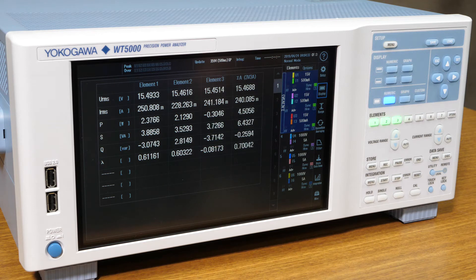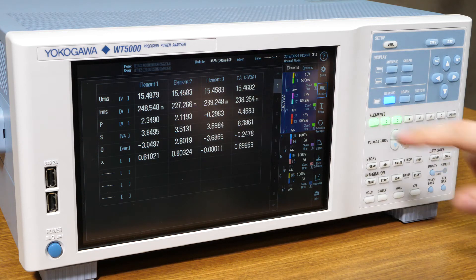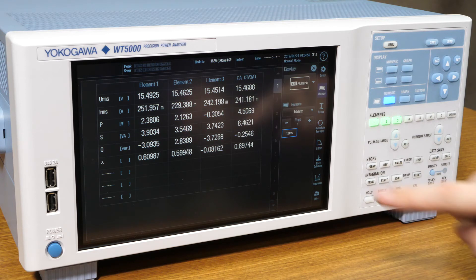Now we are going to walk through setting up the delta computation functions on a WT5000. This process will be very similar on other Yokogawa power analyzers. We will start in the numeric matrix view, but the steps for any of the other views will be similar. First, we will select Display, then select Items.